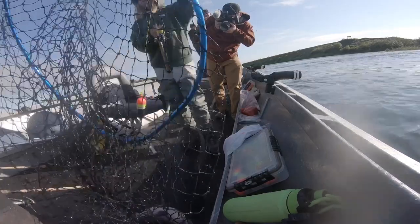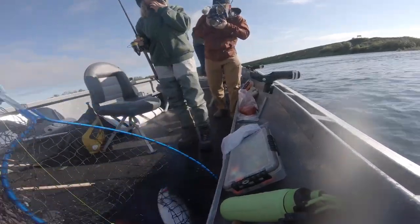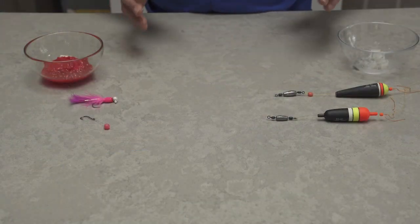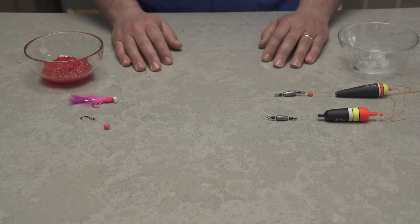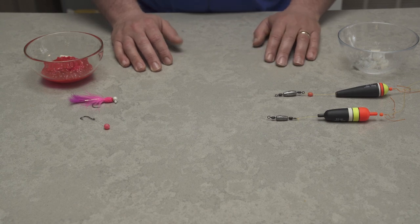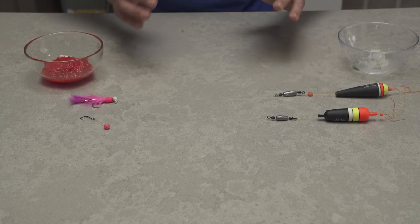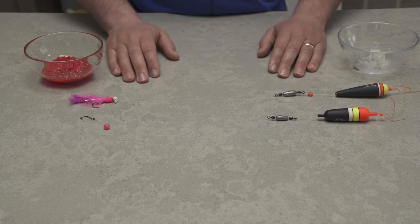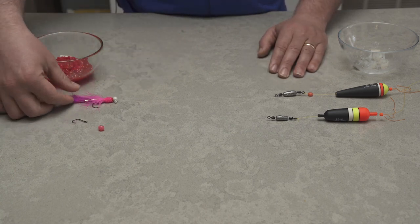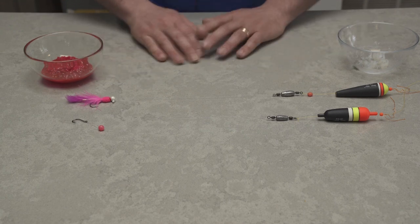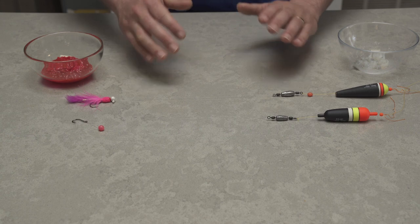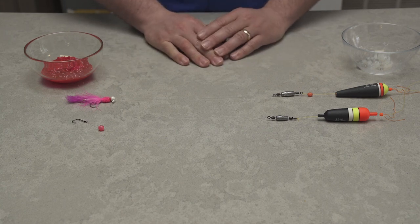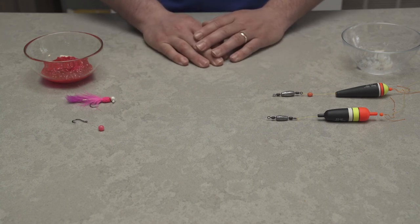At the end of the day, sockeye will bite a wide array of presentations, whether bait or artificial eggs, jigs, spinners, plugs - kind of the whole gamut of traditional salmon lures and presentations. Specifically though, we'd like to go over two different methods. Really it's one method with two different presentations presented in a similar manner. As you can see in front of me, I've got a bead and float setup and I've got a jig and float setup. There's nothing revolutionary here.